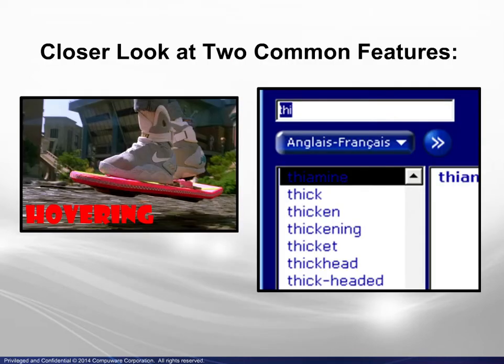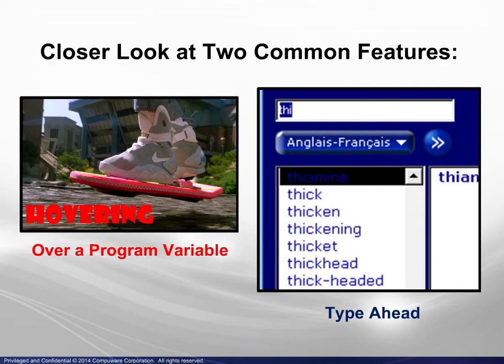At this point we will have a closer look at two of the features most often used when editing COBOL source code: hovering over a program variable, and type-ahead when entering new lines of code.